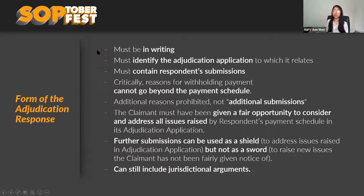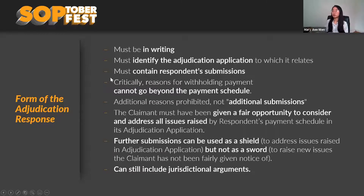In terms of the form of the adjudication response, there's no prescribed form, but section 20 sets out what must be included: it must be in writing, must identify the adjudication application to which it relates, must contain the respondent's submission, and critically, reasons for withholding payment cannot go beyond the payment schedule. Under section 20(2B), you can't include reasons for withholding payment unless they were already included in the payment schedule.